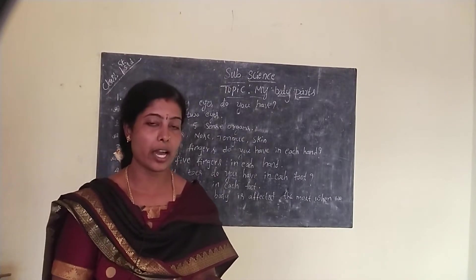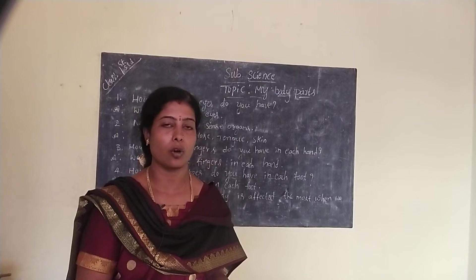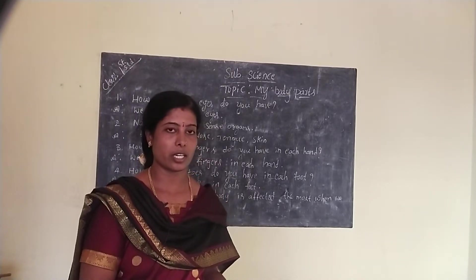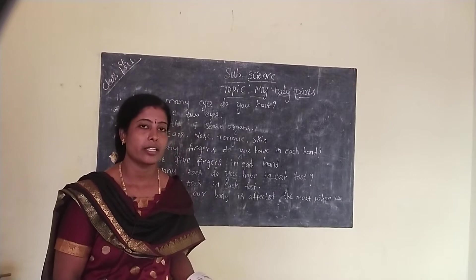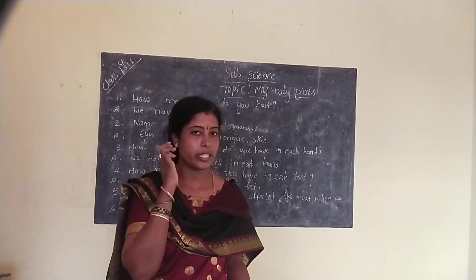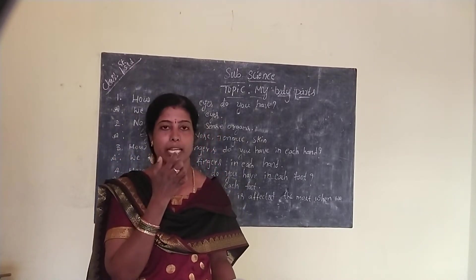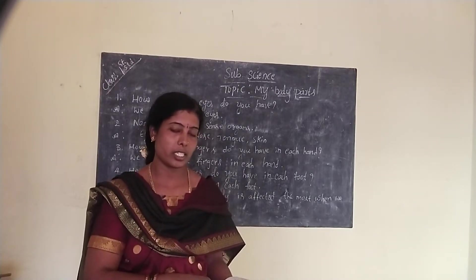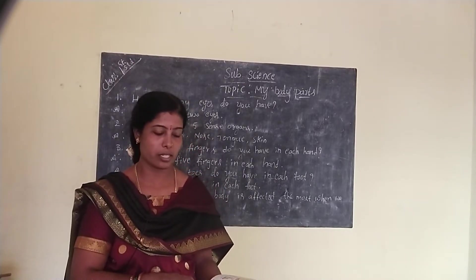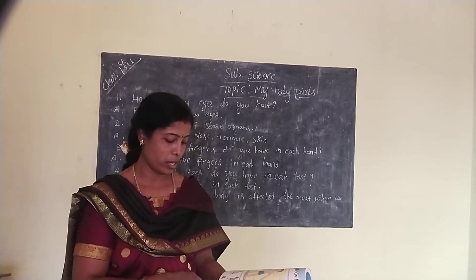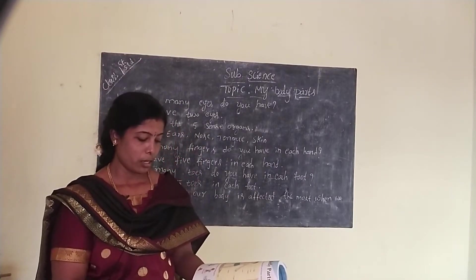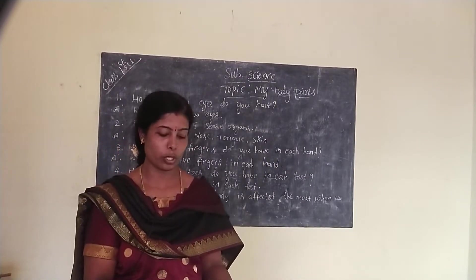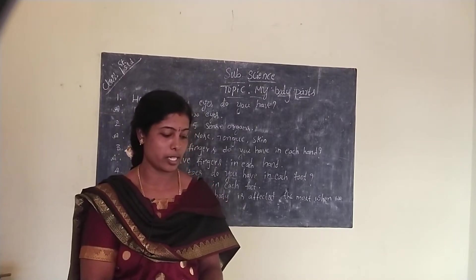And we have some sense organs. How many sense organs? We have five sense organs. Which are they? They are eyes, ears, nose, tongue, and also skin. These are the five sense organs we have. They help us to know the world around us.